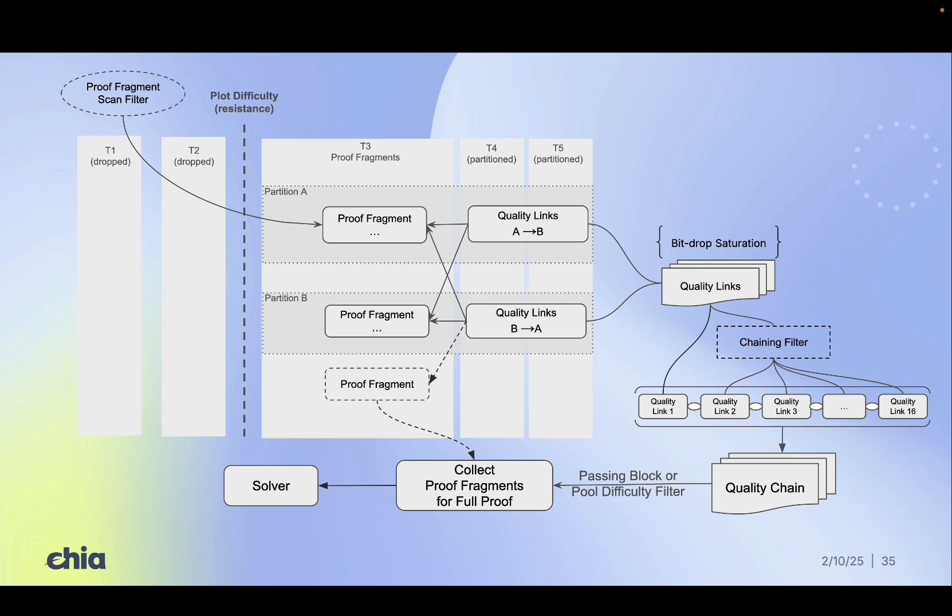When a chain passes, the harvester fetches the missing four proof fragments from disk. These complete the input needed to reconstruct the full proof. The fragments are decrypted and expanded into bit drop x value ranges.